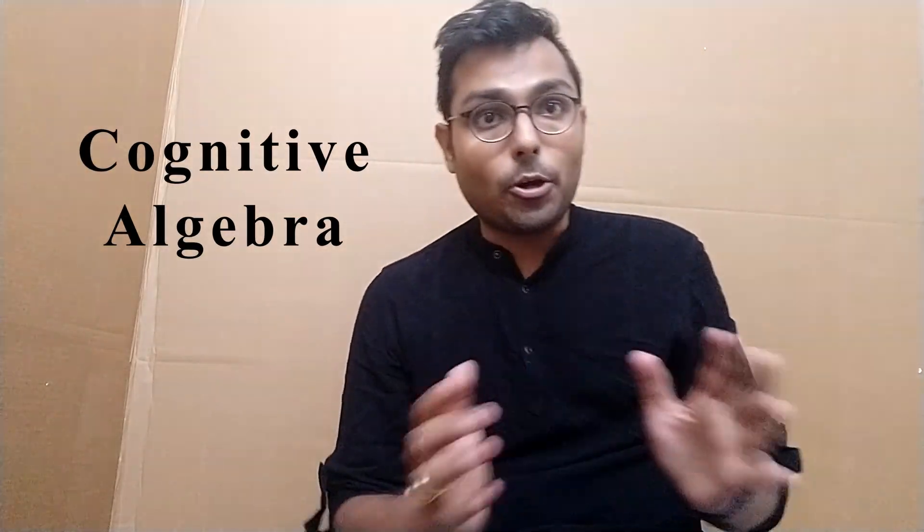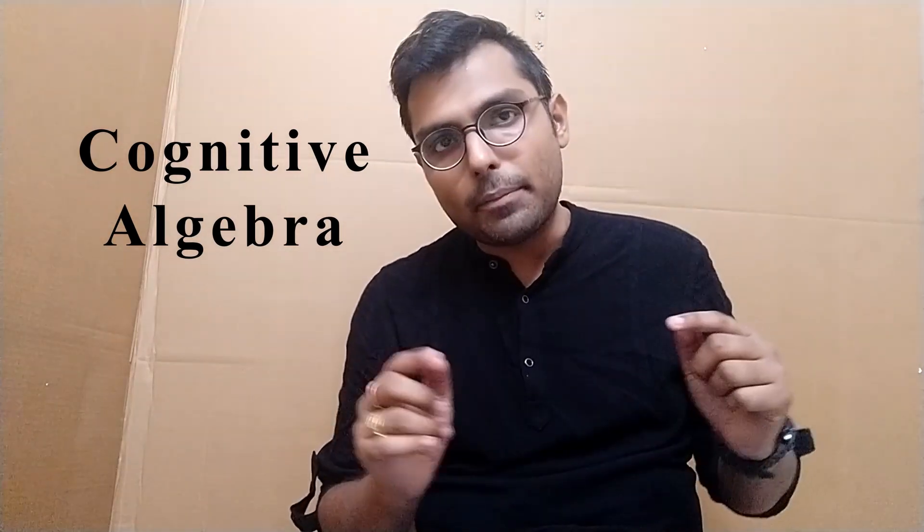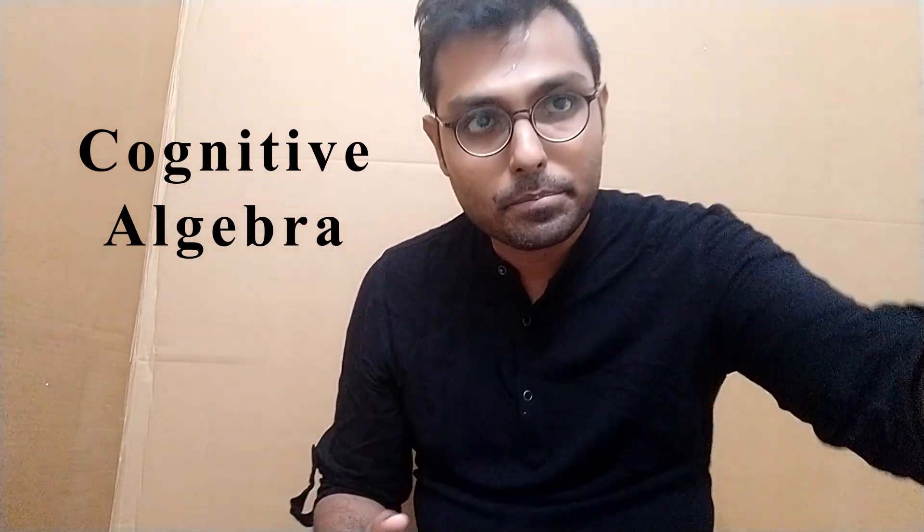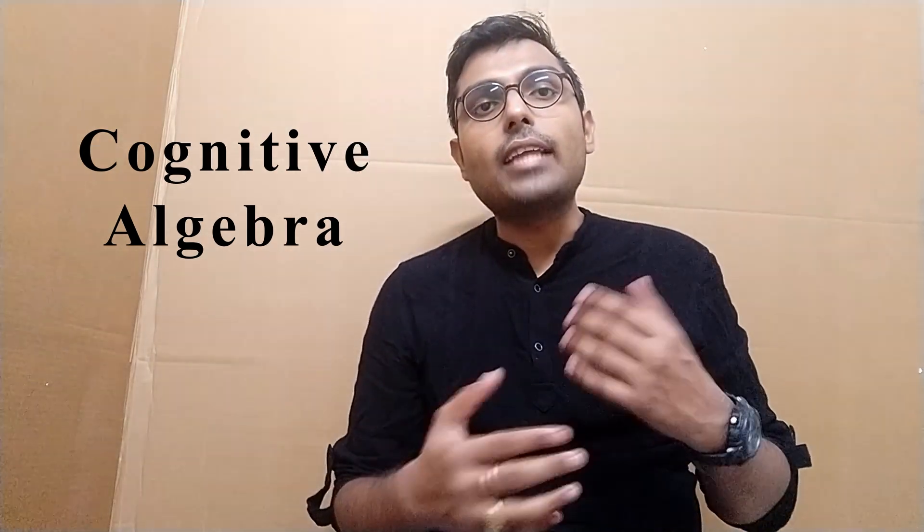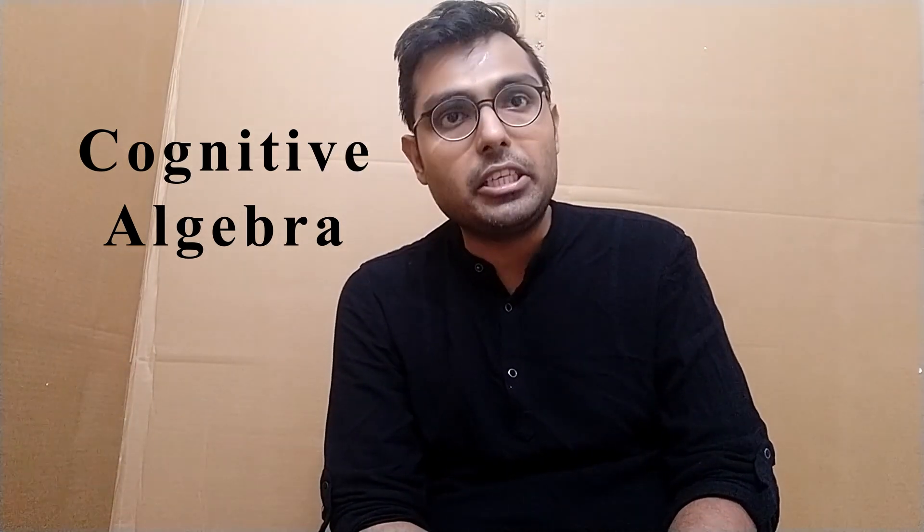The second topic for today is called cognitive algebra. Does it have something to do with maths? Yes, a bit. When we form an impression about a particular person — say your best friend or your grumpy boss — cognitive algebra is a model that talks about how that impression is formed. What the human mind does is assign positive or negative values to the traits and characteristics collected about that individual.